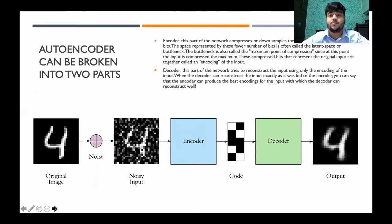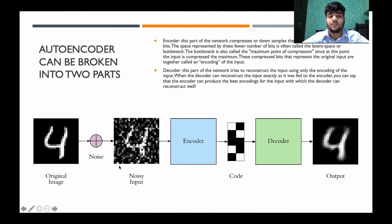The decoder part of the network tries to reconstruct the input using only the encoding of the input. When the decoder can reconstruct the input exactly as it was fed to the encoder, you can say that the encoder can produce the best encoding for the input with which the decoder can reconstruct well. Here is an example: the noisy image is given as input to the encoder. The encoder fetches the features and gives them to the decoder, and the decoder reconstructs the image so that the original image and the produced image are comparable.